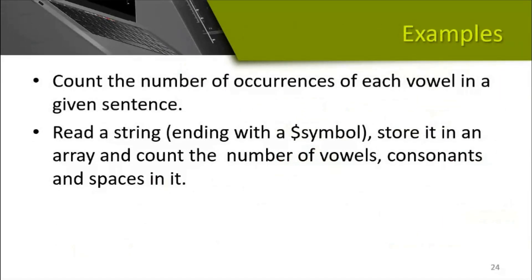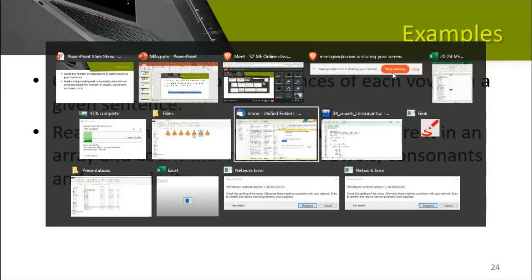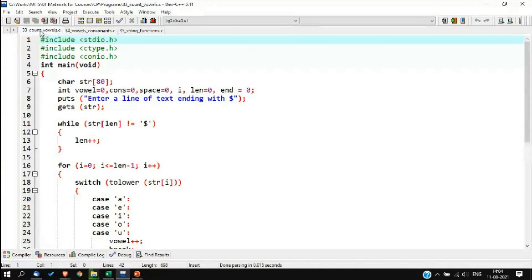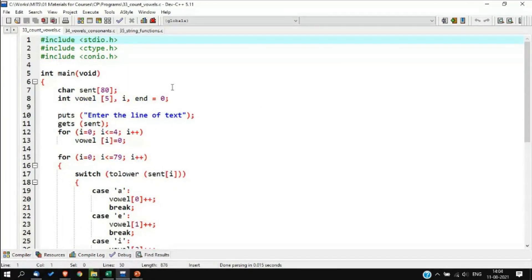Now let's look at some examples. The first example is to count the number of occurrences of each vowel in a given sentence. Given any sentence, we count how many times each vowel — A, E, I, O, and U — appears. Let's see the program.